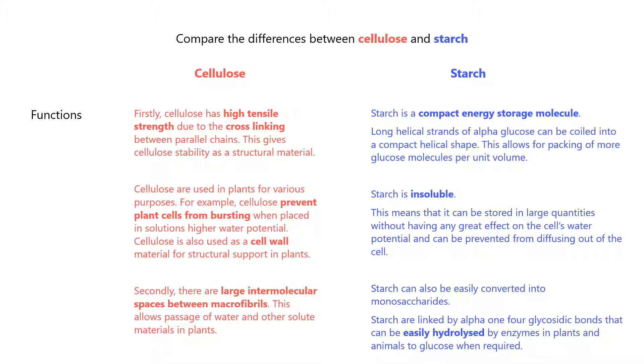Starch can also be easily converted into monosaccharides. Starch is linked by alpha-1,4 glycosidic bonds that can be easily hydrolyzed by enzymes in plants and animals to glucose when required.